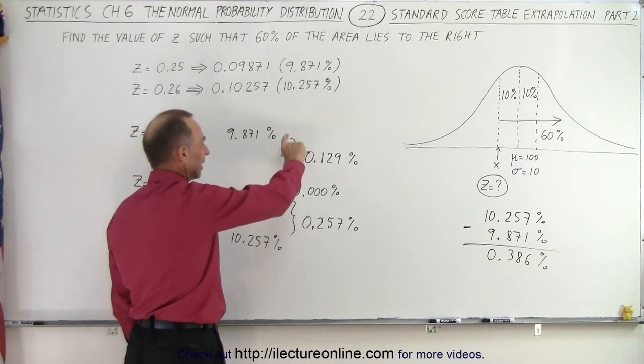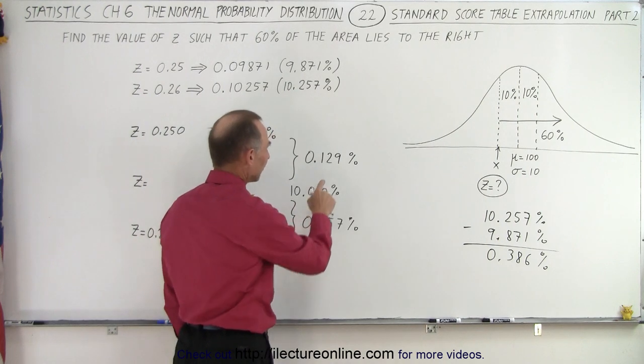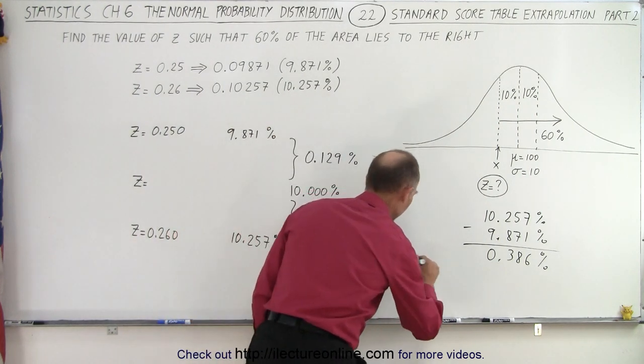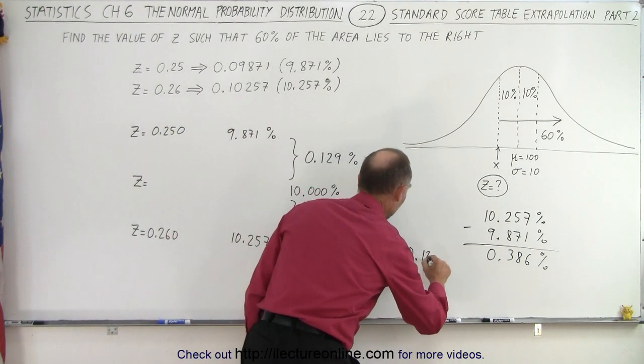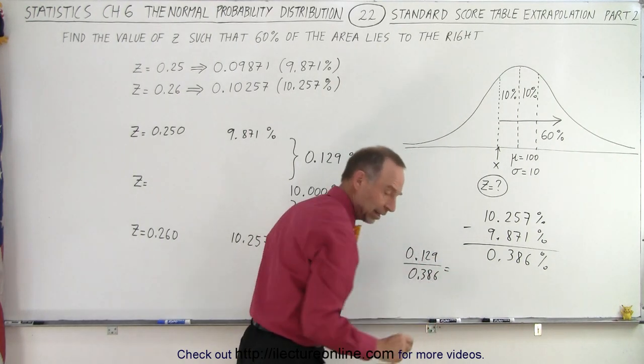So what fraction is this corresponding to? So, if we divide this number by that number, so we get 0.129 divided by 0.386, we get,